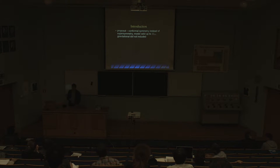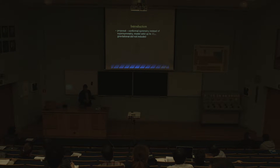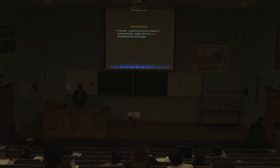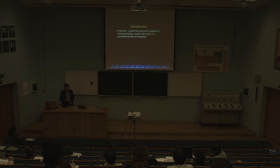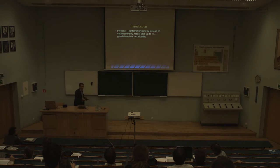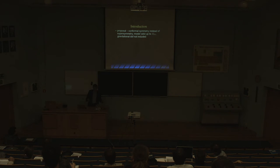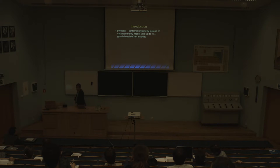The model is assumed to be valid up to the Planck scale. Something happens around the weak scale and later nothing happens up to the Planck scale — there is a grand desert. We don't include gravitational degrees of freedom, so we don't try to explain inflation or the cosmological constant. We are talking about particle physics from here up to the Planck scale.